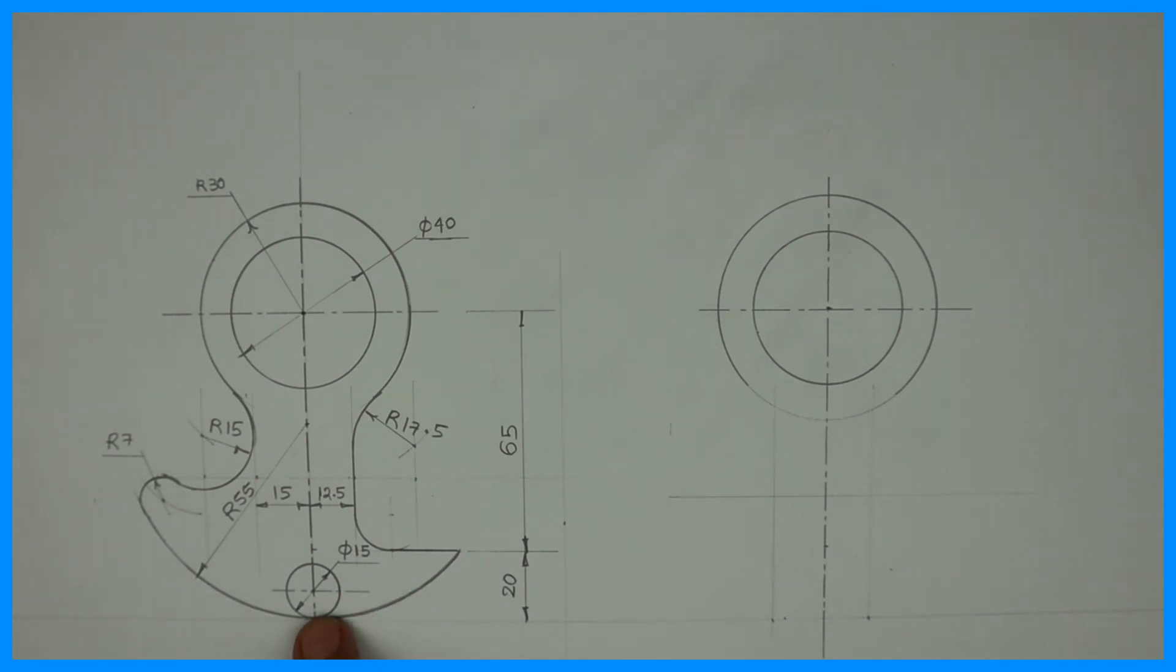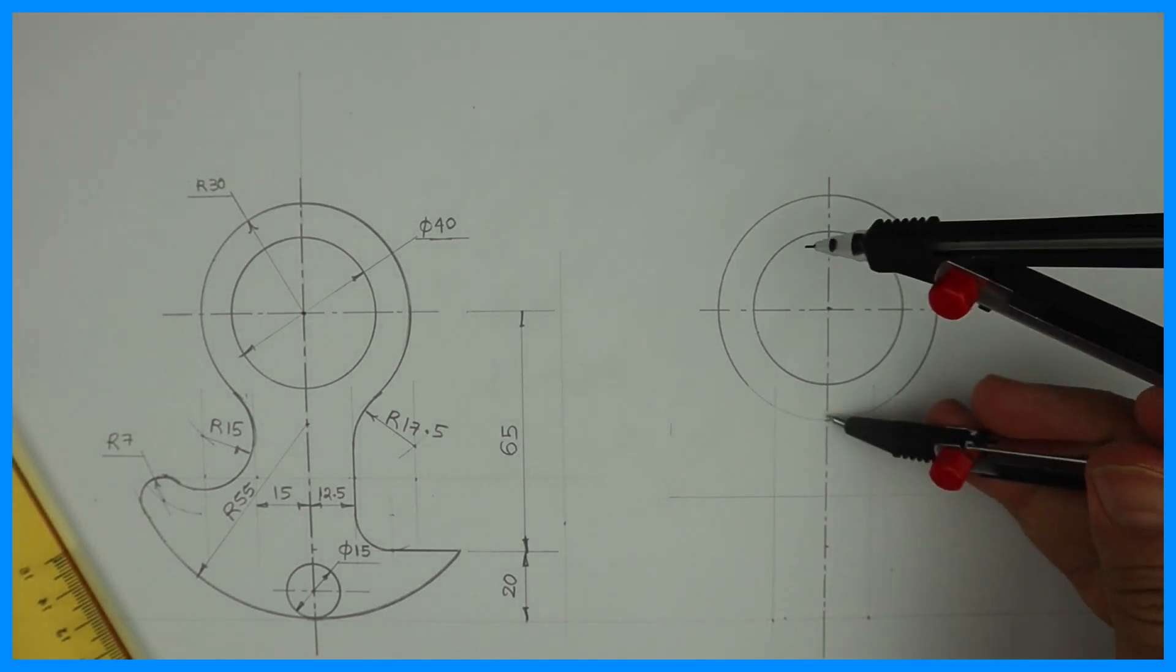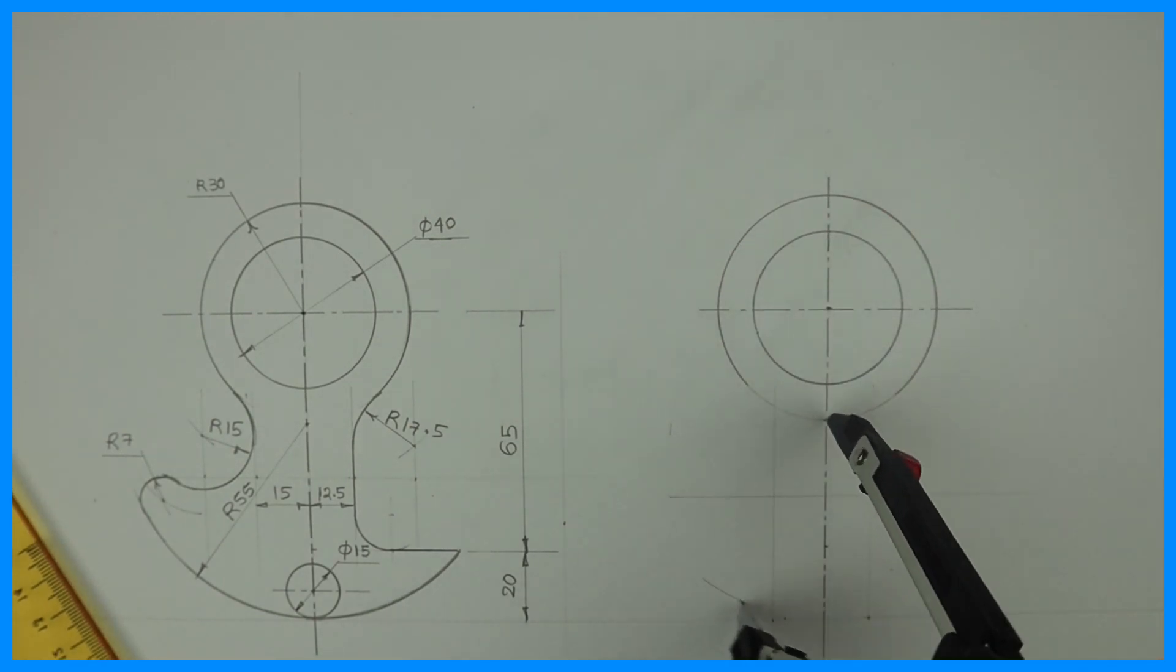And see this radius 55. So from the bottom you go up by 55. It will come here. And from that point you draw radius 55.